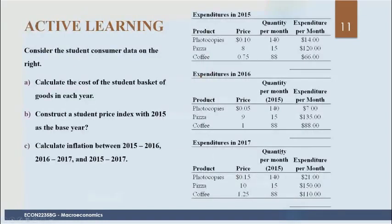Here's a question. We're going to calculate a student price index assuming students only consume three products: photocopies, pizza, and coffee. We have prices in each year, and quantities only for 2015, which we designate as the base year. Calculate the expenditures each year and then create the index.